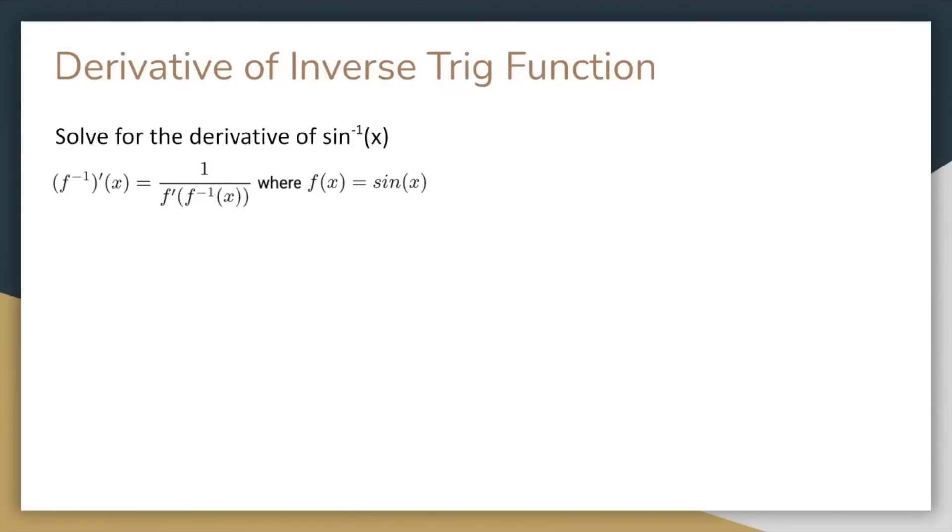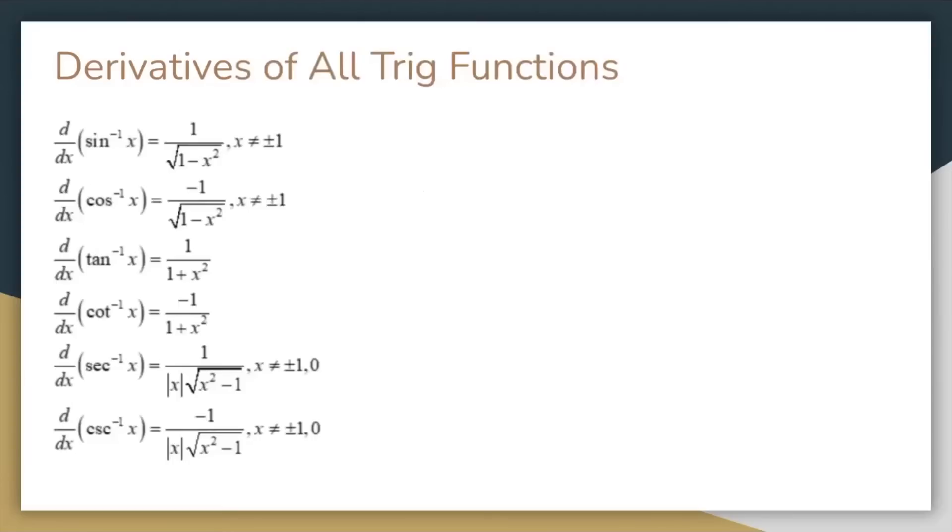Now we can use this formula to differentiate an inverse trig function. We have f inverse of x is the inverse sine of x, so f of x equals sine of x. On the right side of our formula, f prime, the derivative of sine of x, is just cosine of x. And on the inside, we have inverse sine of x. You can simplify cosine of inverse sine of x by drawing a right triangle with one angle equal to inverse sine of x. And as you can see, adjacent over hypotenuse equals the square root of 1 minus x squared. So we can plug that back in to get our final answer. If you're curious, here are the derivatives of the other inverse trig functions, though I do not recommend remembering these.